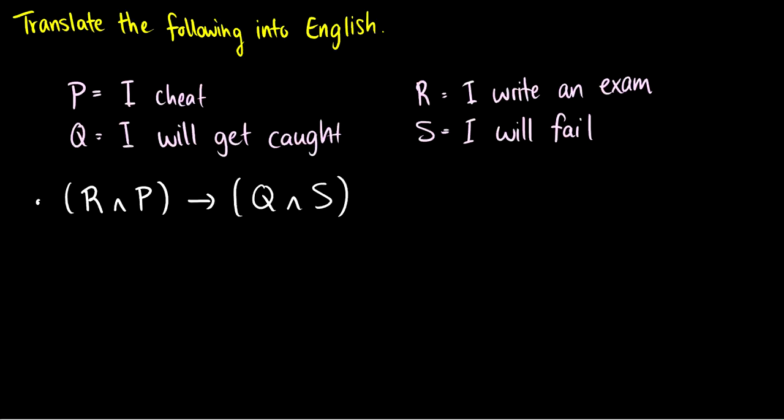So I am just going to read this out. R and P arrow Q and S. And this can be translated to if R and P, then Q and S. So how can we translate this into English? Well, let's do the arrow in a color. So we have if a bunch of stuff, then some more stuff. And let's do the first bit first.